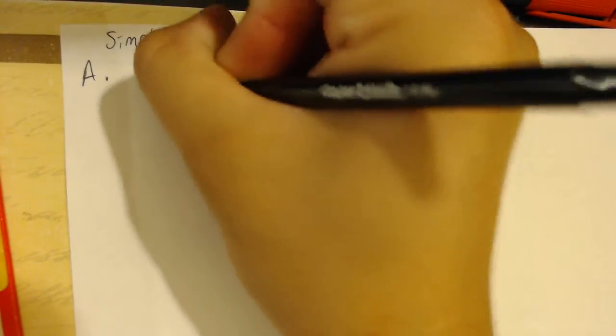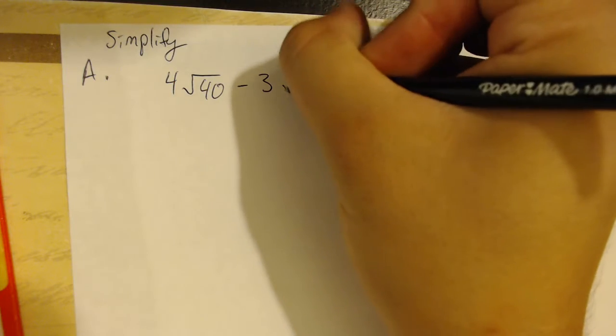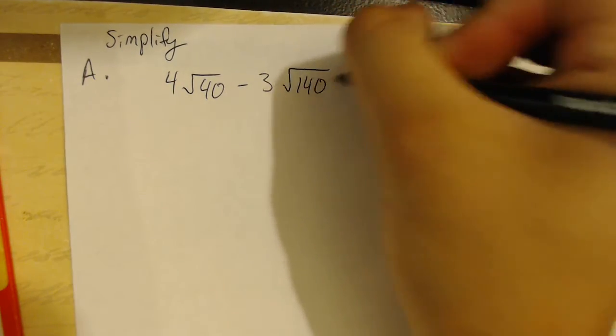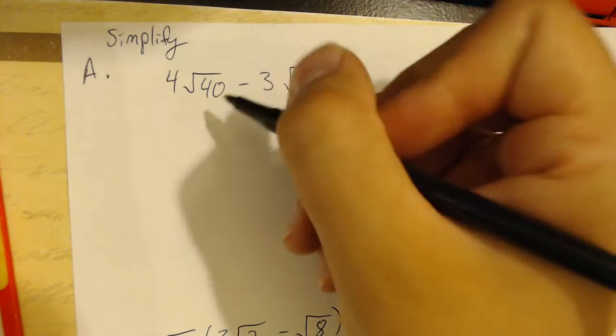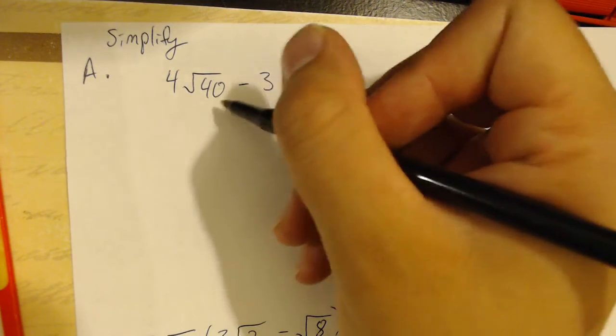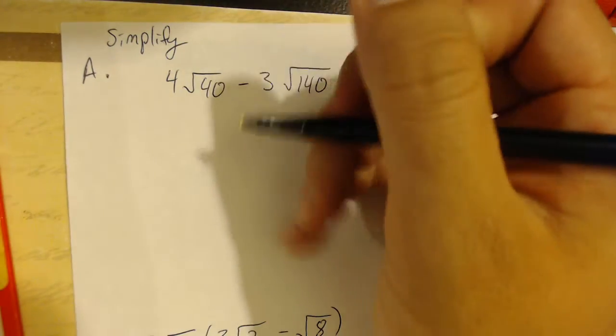To simplify, we'll take problem A, which is 4 times square root of 40 minus 3 times square root of 140. The first step here is to rewrite our radicals, or simplify the radicals. We do that by using factor trees.